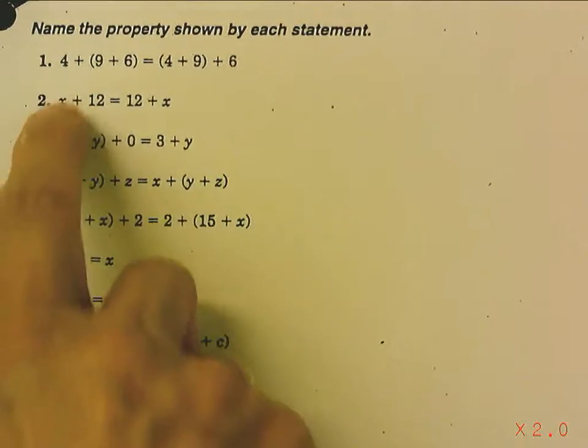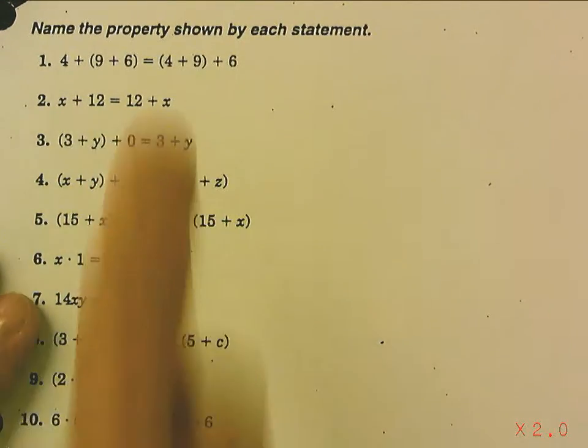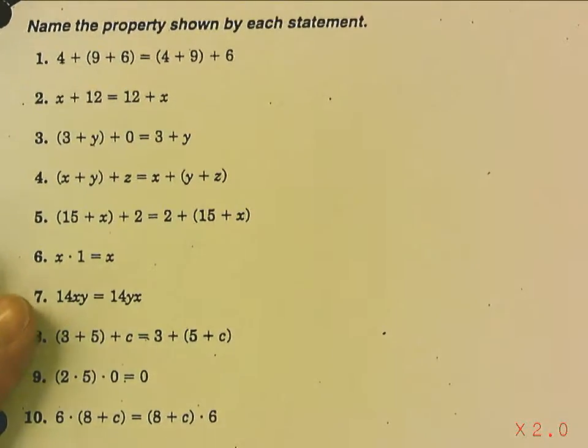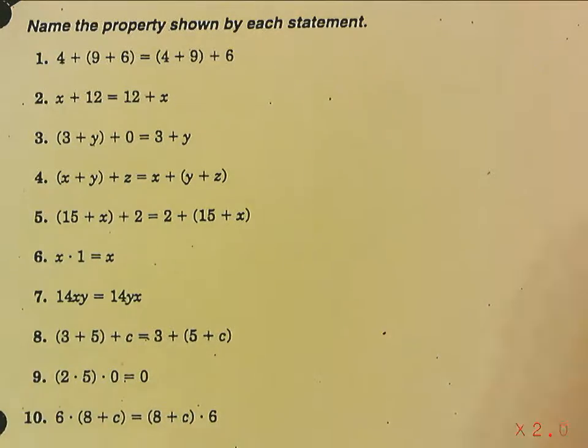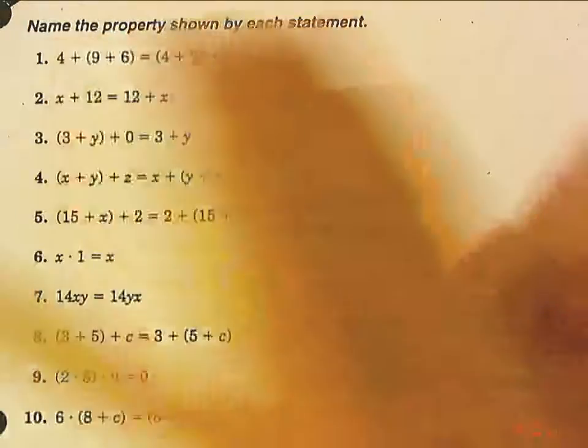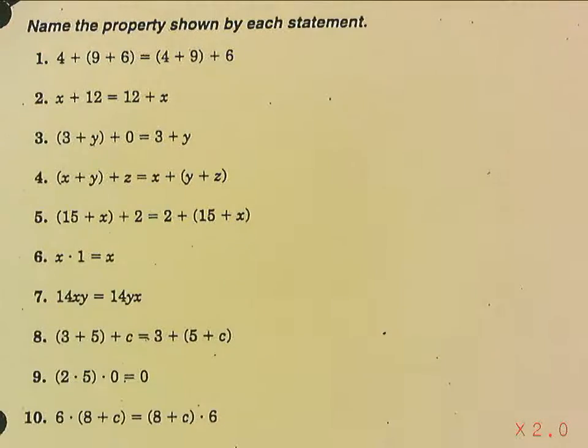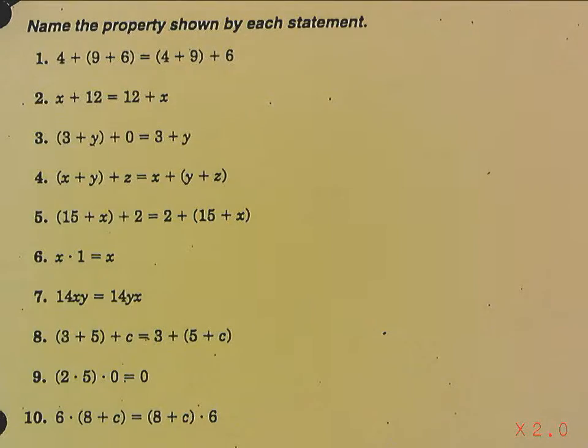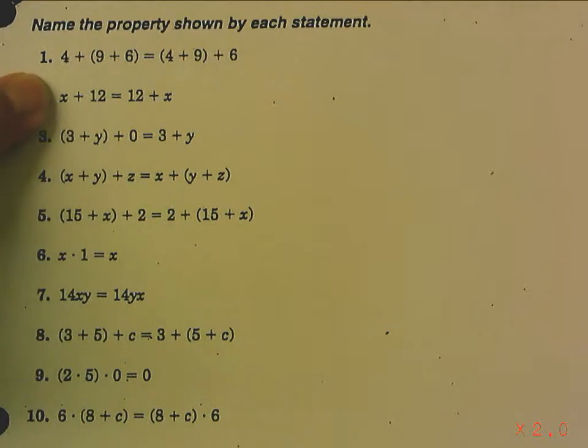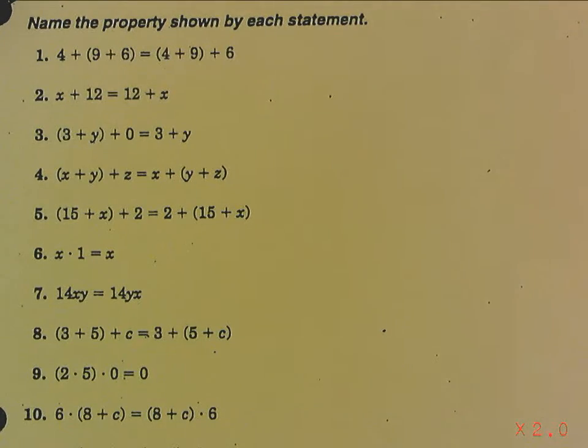Okay, now for the next one, x plus 12, 12 plus x, notice x and 12 switched places. They moved. We think of commuting as moving from home to work, work to home. So this is the commutative property of addition.